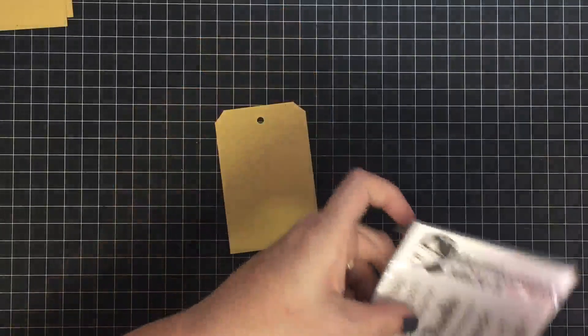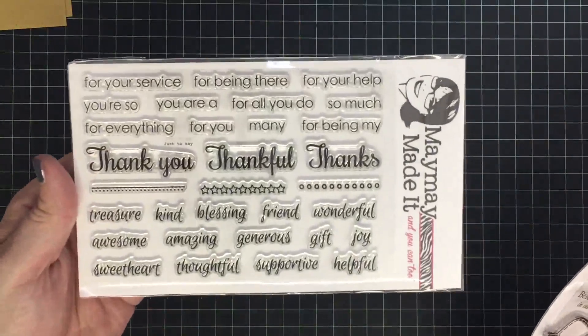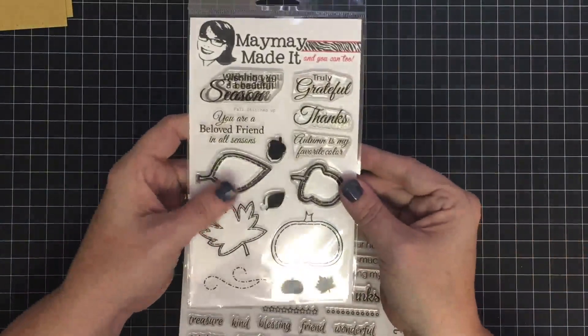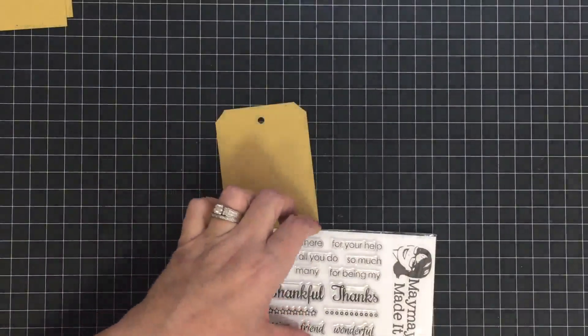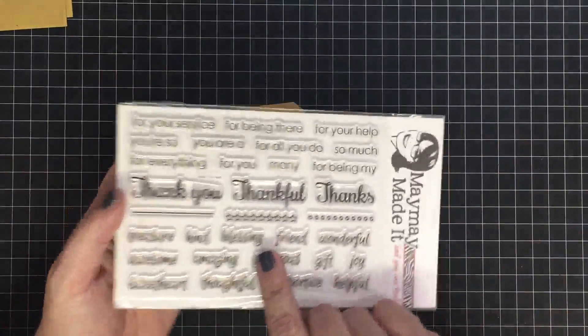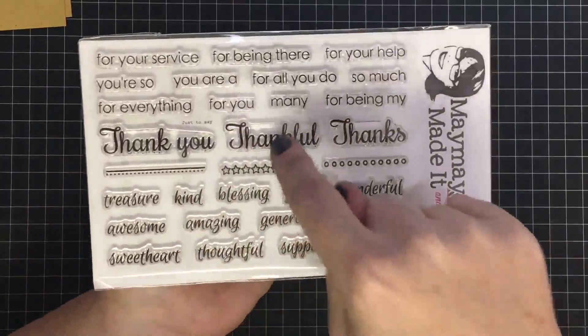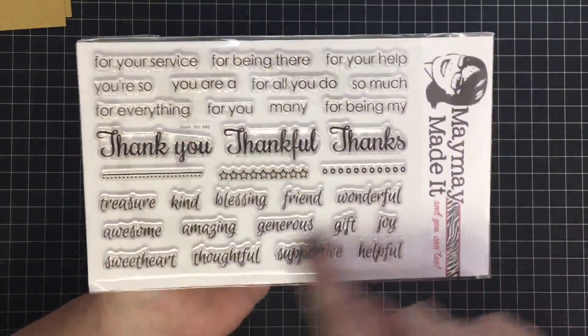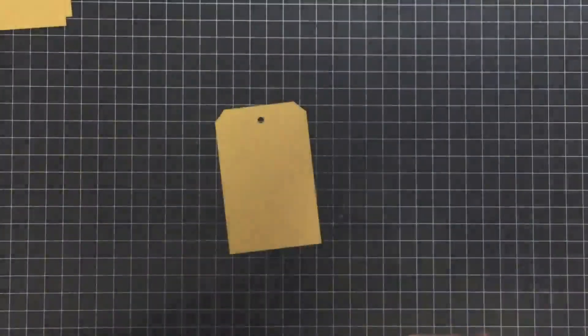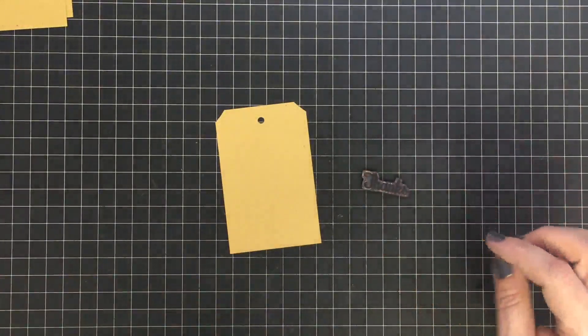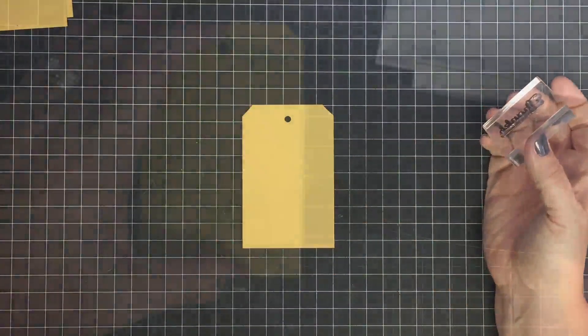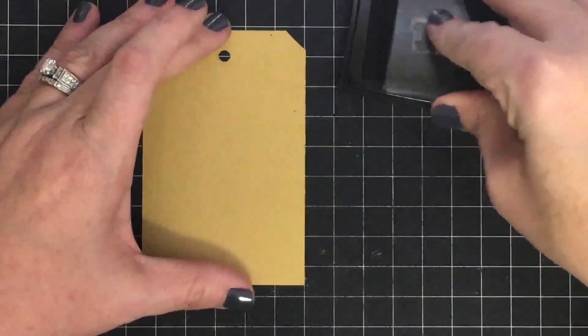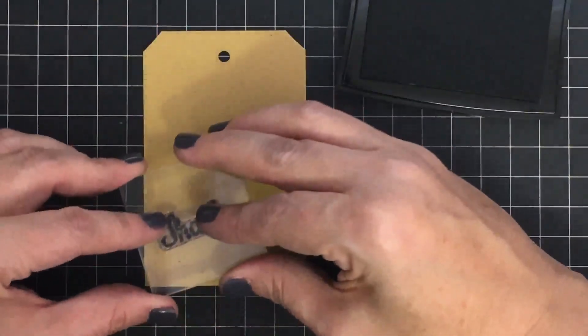I'm going to use two stamp sets today. This one is called Just to Say Thanks, and this one is Fall Stitched Up. I think this will be fun for what I'm doing. I'm going to start with this guy. This stamp set is designed with thank you, thankful, and thanks, and then all these words to go with it in any way you want. I'm going to start with thanks. I'm going to put that on a block. You can see it is well loved because it is really dirty. I'm going to bring my tag over and, using some Versafine Onyx Black ink, ink that up. For this one I'm going to take the thanks and put it on an angle kind of at the bottom.